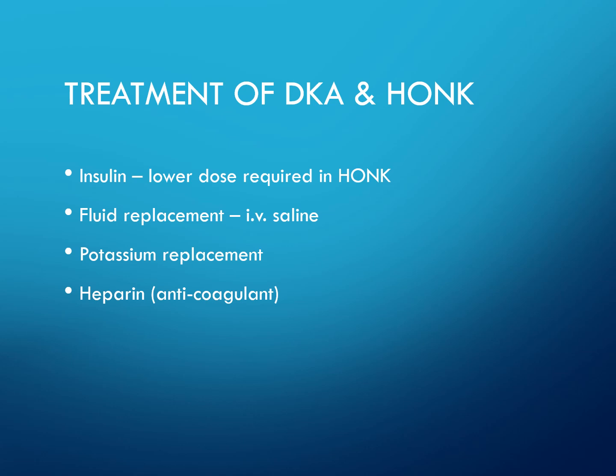Treatment for DKA and hyperosmolar non-ketotic coma includes insulin — with a lower dose required for HONK — fluid replacement with intravenous saline, potassium replacement, and heparin as an anticoagulant.